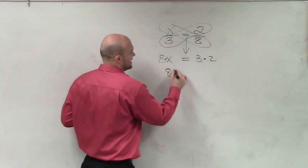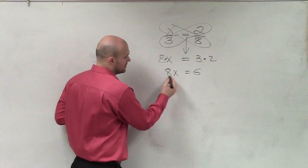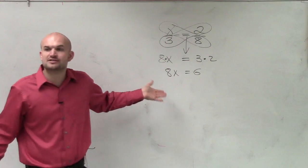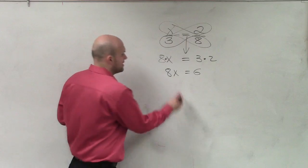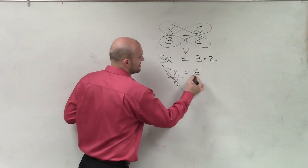Now I simplify this, so that's 8x equals 6. Then, obviously, what is my inverse operation of multiplying by 8? Divide by 8. That divides to 1.